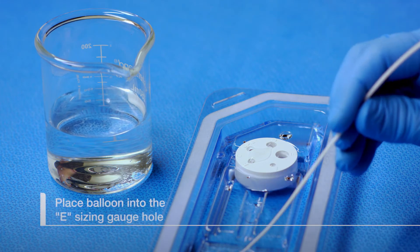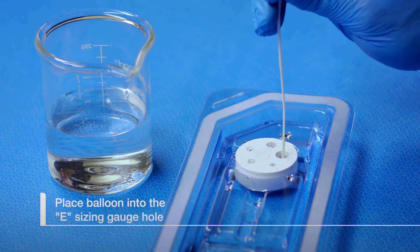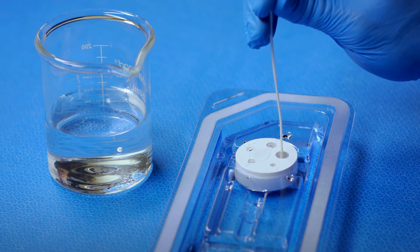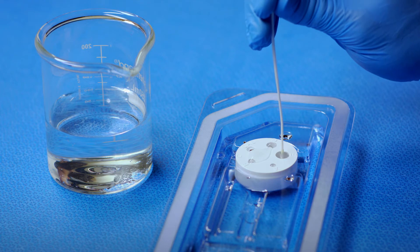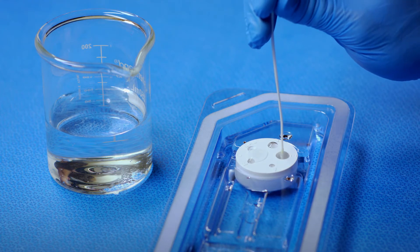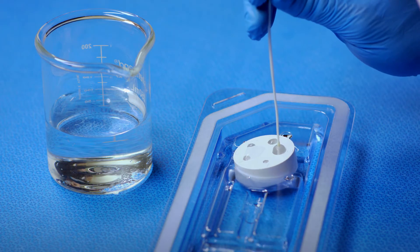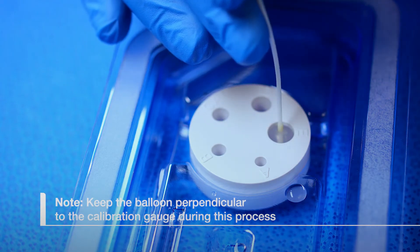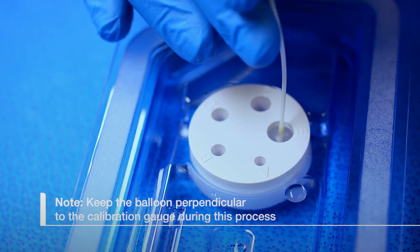Place the deflated balloon in the center of the E sizing gauge hole on the calibration gauge. Slowly inflate the balloon until it just touches all sides of the E gauge hole. The balloon should drag slightly when moved in and out of the gauge hole. Note, keep the balloon perpendicular to the calibration gauge during this process.